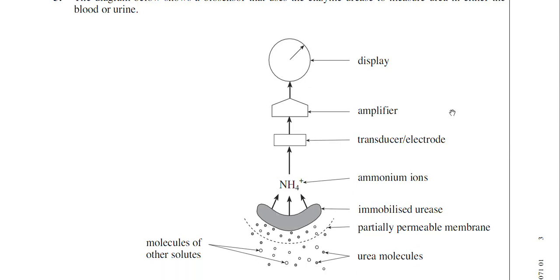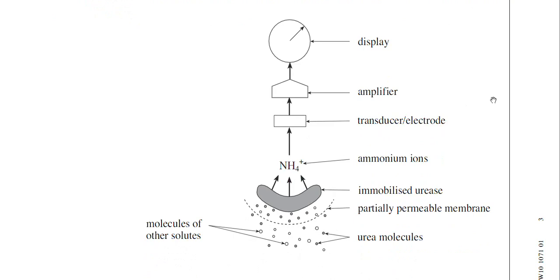If we just look at the diagram that the examiner has drawn there, it looks similar to the one that I've produced in my notes. But what you've got to realize is there's lots of ways of representing a biosensor, but every biosensor has the same key features within it. If we just go through the features, you've got the partially permeable membrane, very important. This is the region where the enzyme is immobilized. Now in this question, they're actually immobilizing urease because that enzyme can actually detect urea.